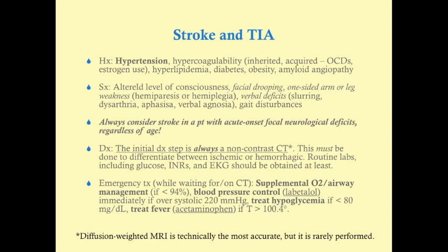The typical stroke patient often struggles with hypertension, which is the number one risk factor for stroke. We also look for hypercoagulability, particularly in younger patients — this includes inherited states like Factor V Leiden, Protein C or Protein S deficiency, as well as acquired factors like oral contraceptive drugs and estrogen use. Other risk factors include hyperlipidemia, diabetes, obesity, and amyloid angiopathy.